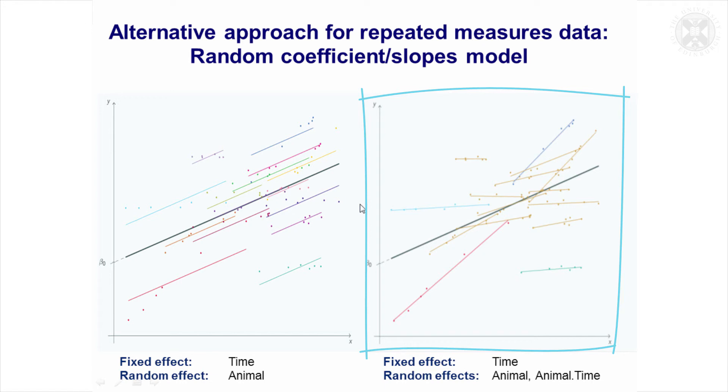Of course you could fit that slope, which would be the animal by time effect, as fixed. But then that's treating all the animals as independent, and you really want to treat that as a source of variation - that the slope varies randomly between the animals. That then allows you to assess the overall slope, the time effect, against the background of random variation of the slopes between the animals.